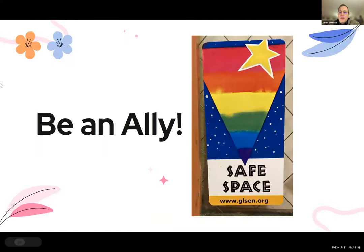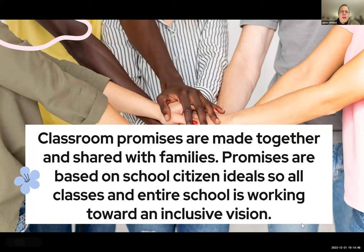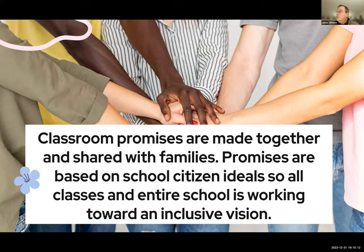I also have an ally sticker on the door — a lot of my colleagues do as well — so students know it's a safe space and they're not excluded from anything. My wife explained that at her elementary school they make classroom promises at the beginning of the year. Those promises — of being good citizens, being kind, being respectful — are shared with families and used throughout the school, so all classes work toward an inclusive vision that everybody can take advantage of.